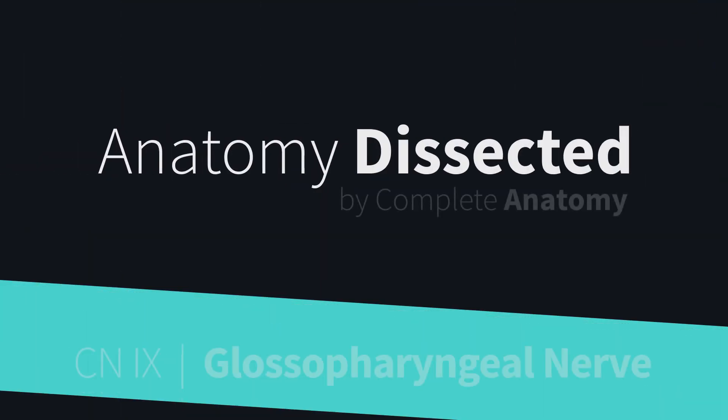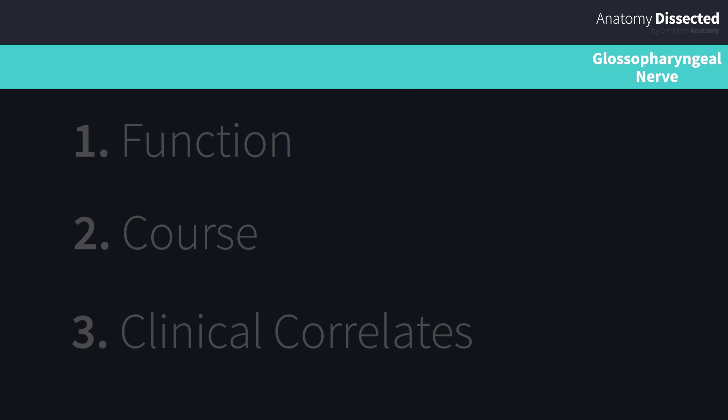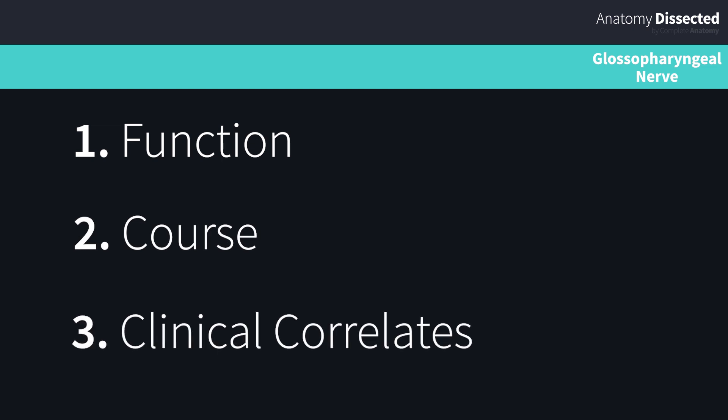Welcome back to Anatomy Dissected by Complete Anatomy. We're two-thirds of our way through the cranial nerve series. Today we'll be taking a look at the ninth cranial nerve, the Glossopharyngeal nerve. As we've done with our previous videos in the series, we'll first explain the function of this nerve, explore its course, and then round off by looking at a few clinical correlates.